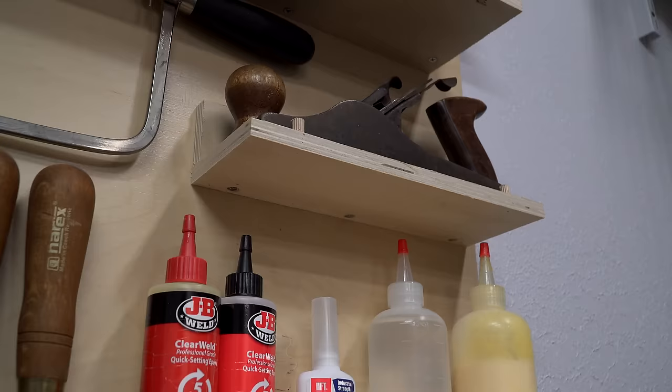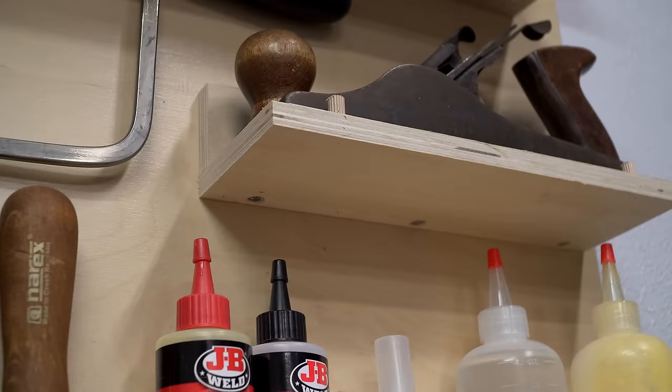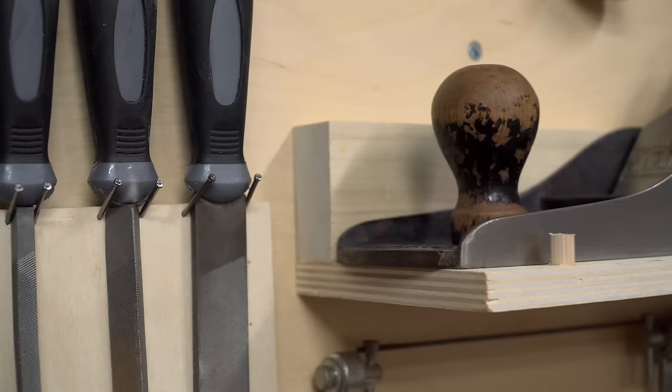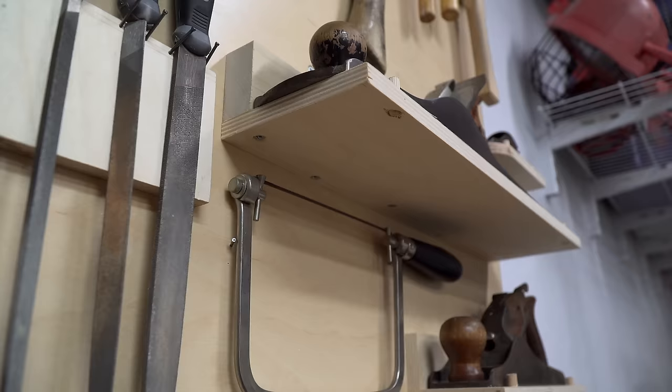The bottom portion of each shelf is secured to the wall mount portion of each shelf with screws. I used a thicker board as the wall mount for the heaviest plane so that I could stagger the screws that hold the shelf together. This just helps make for a stronger joint.